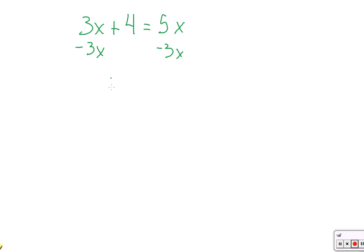On this side, we're left with 0 plus 4, so we have 4 equals 5x minus 3x is 2x. Look at that. Divide by 2, x is 2.